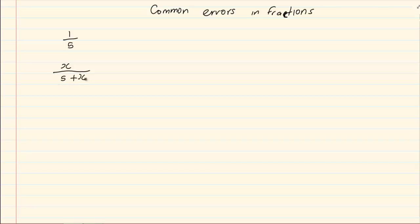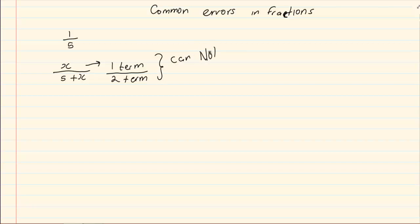When we have one term over two terms, we cannot cancel. I am not allowed to do this and say my answer is 1 over 5. That is incorrect. That is also such a common error that we usually find major loss in marks for these silly errors.